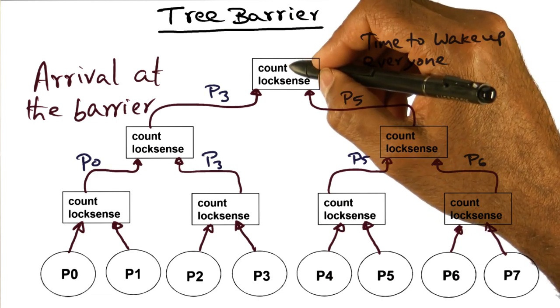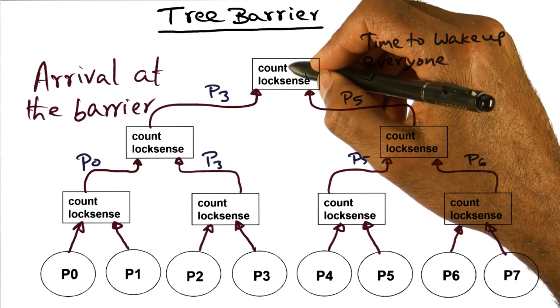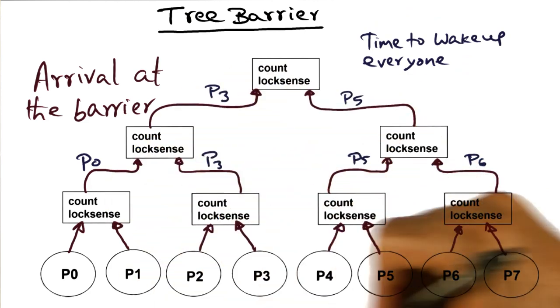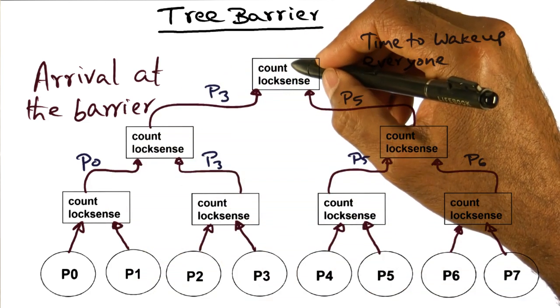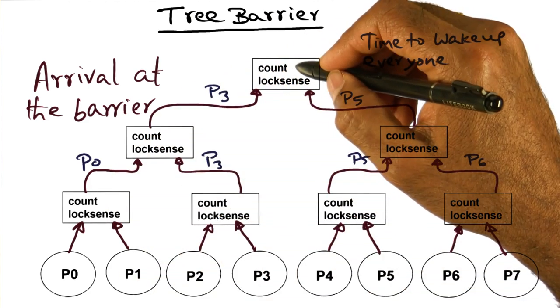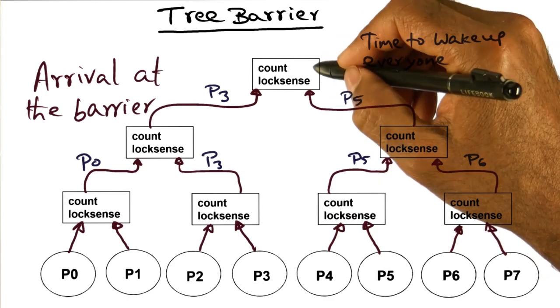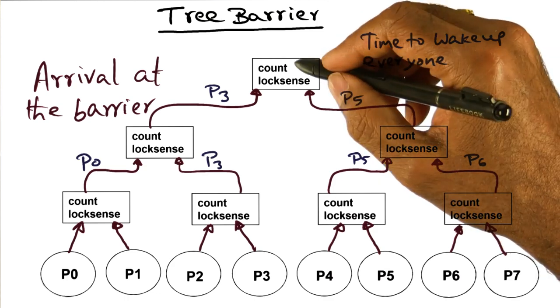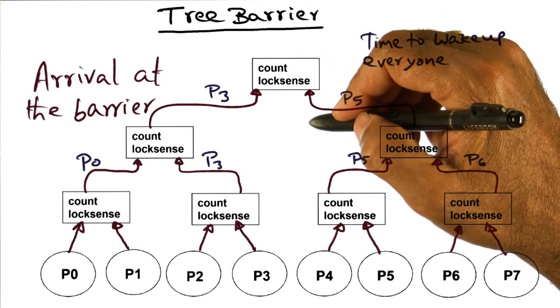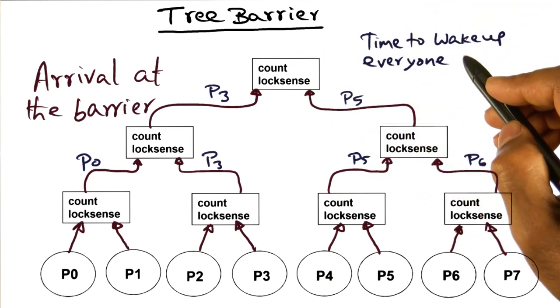So count at the root of the tree becoming zero is indicative to the last arriving processor, P5 in this case, that everybody has arrived at the barrier. So it's time now to wake up everyone.